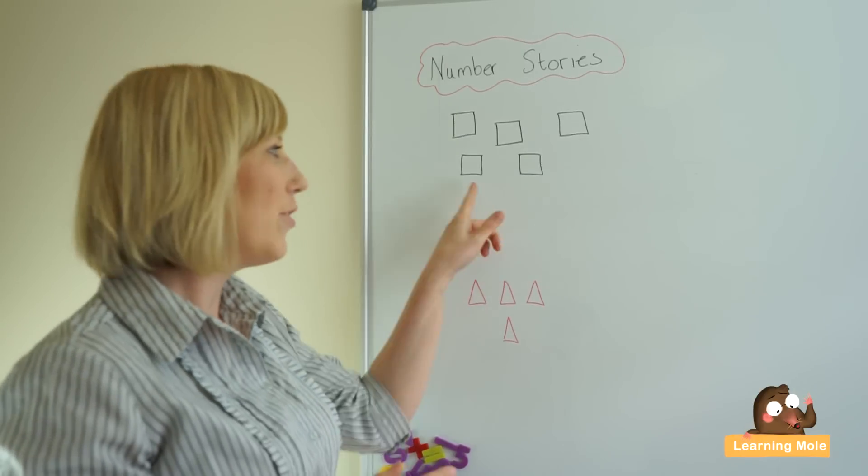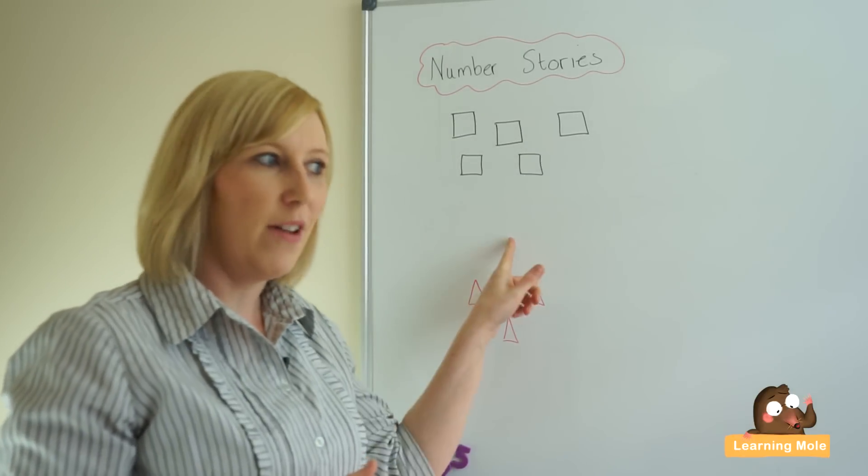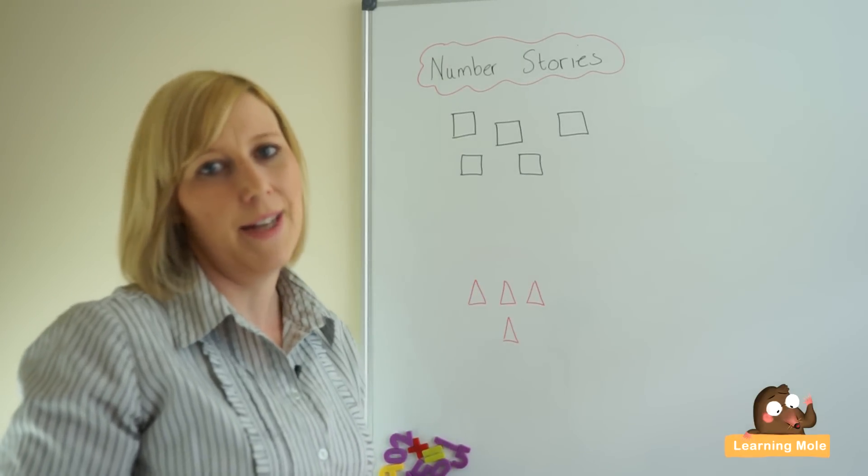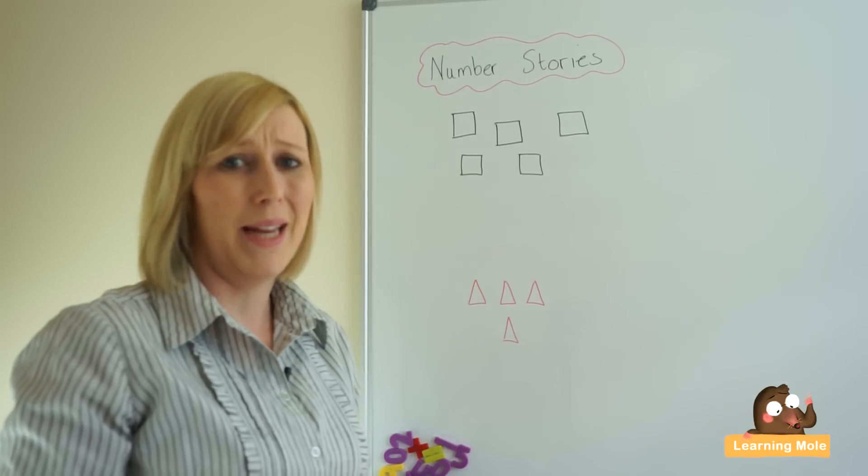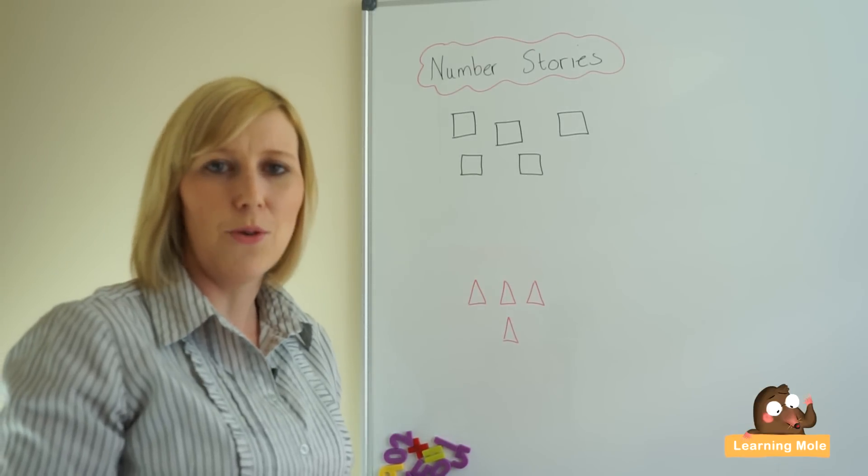So I've got my five squares, and these are five windows, and they're five windows in a house, and a very naughty boy comes along. He breaks a window. How many windows are going to be left?